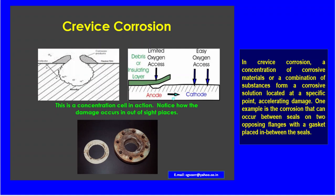When there is more access to oxygen, that place acts as cathodic. Under the anodic region, where there is debris or deposits, corrosion products form and crevice corrosion is initiated. This is an oxygen concentration cell in action. The damage occurs in out-of-sight places like flanges, due to the wrong selection of gaskets.